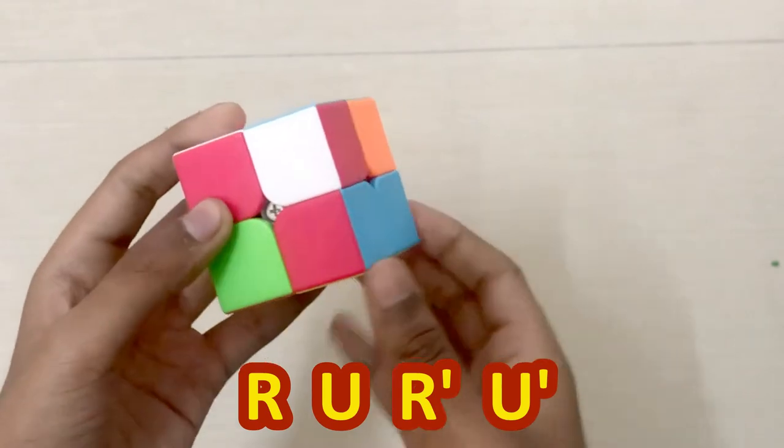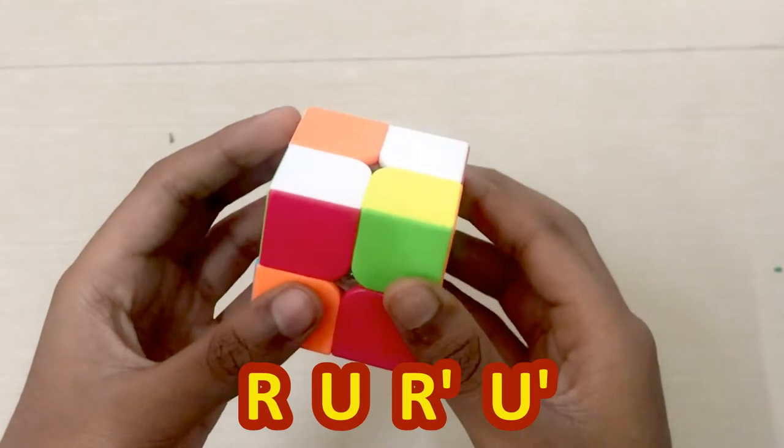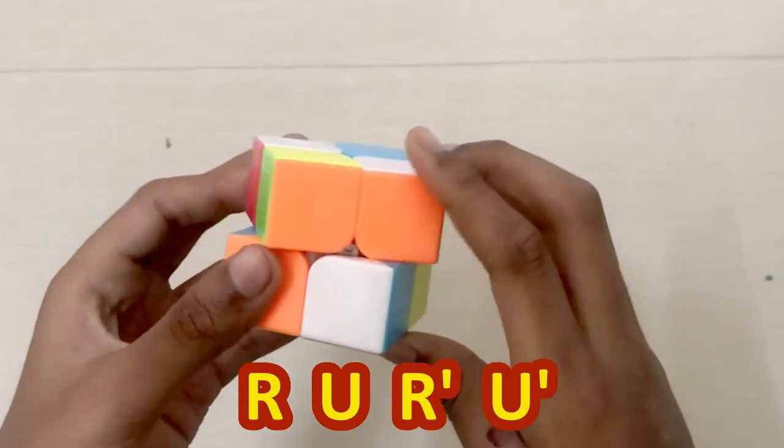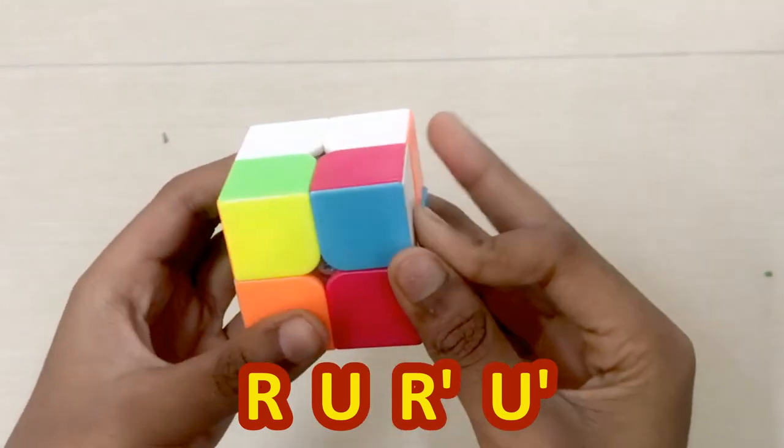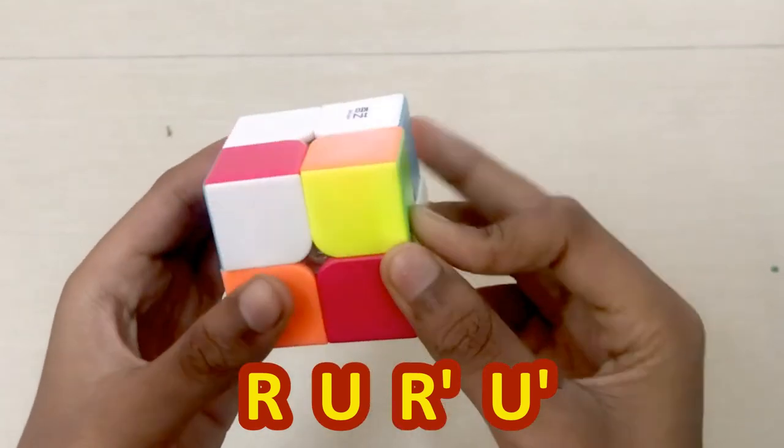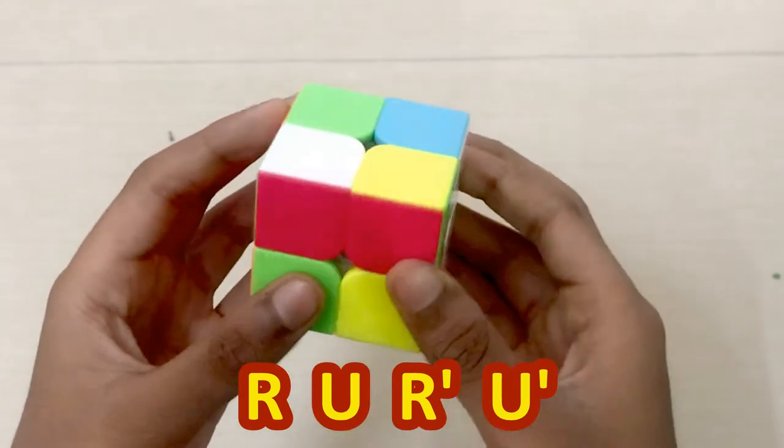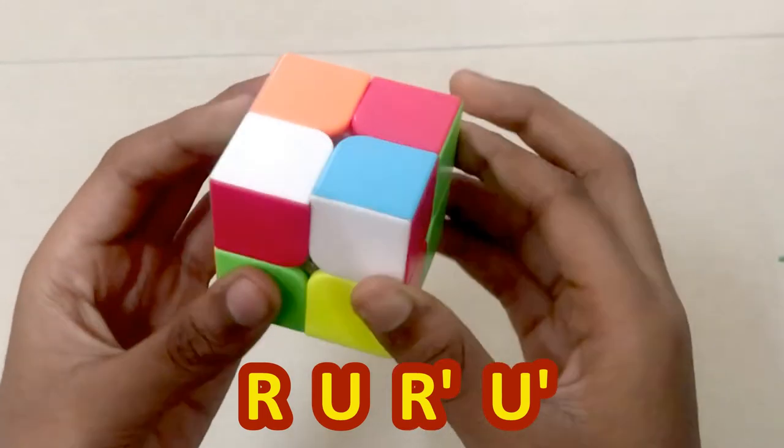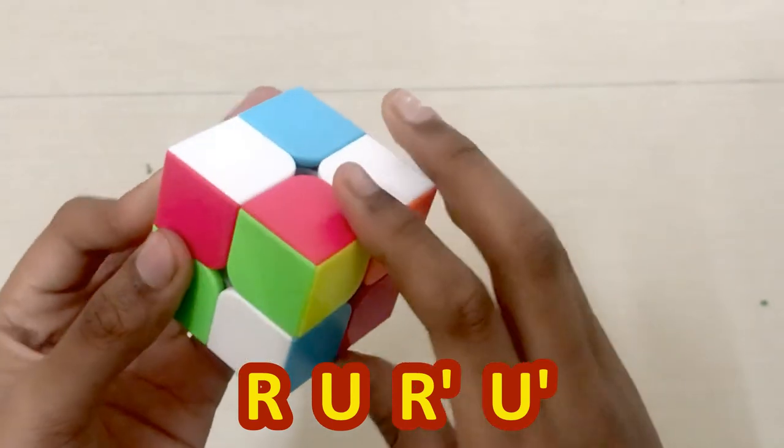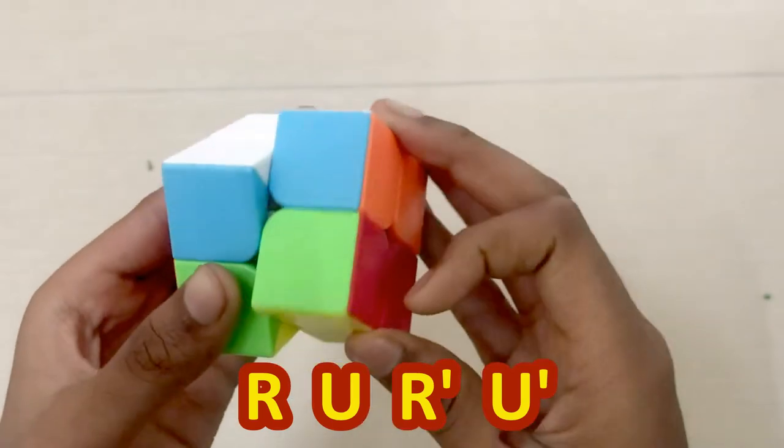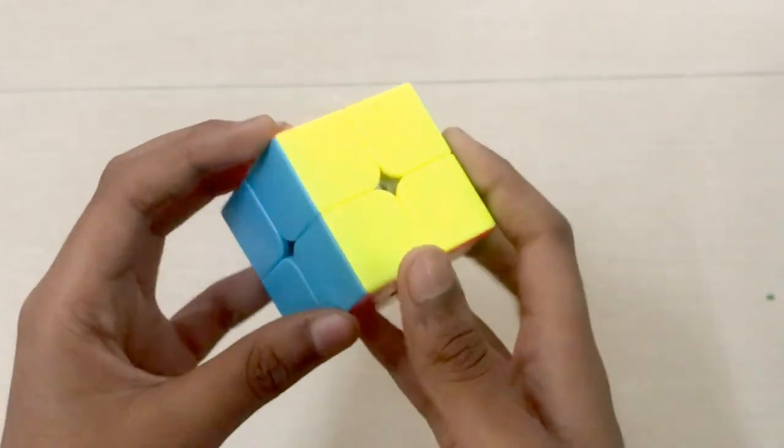Repeat this algorithm until the yellow piece comes to the bottom. Turn the bottom layer and repeat this algorithm for all pieces. Now the cube is solved.